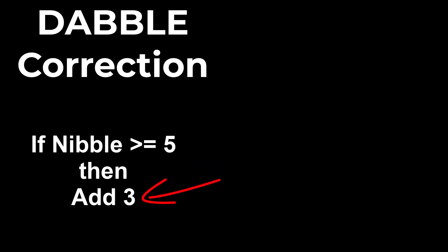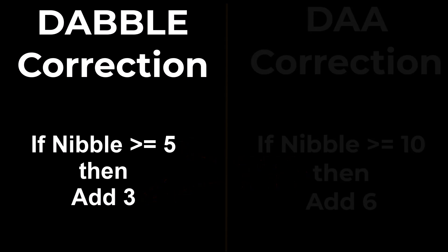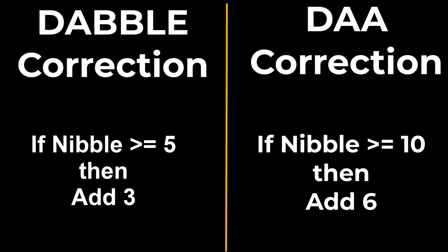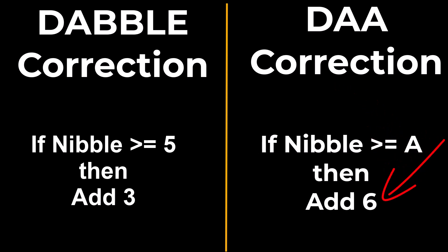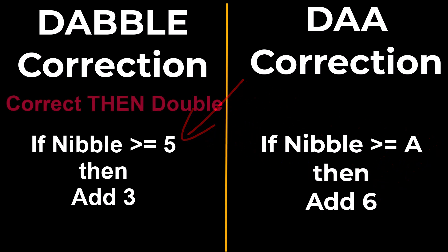The logical question is, why those two values? You know, five and three, they seem so random. But if we think about it, what does the DAA instruction do? If any nibble is 10 or above, meaning it's no longer a decimal value, then it adds six to skip over all of the hexadecimal values A through F, right? This dabble is doing the exact same thing, but the values are halved because it isn't doubled yet. We're doing our arithmetic before we doubled it.